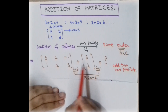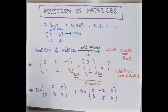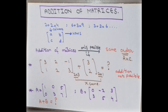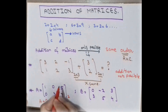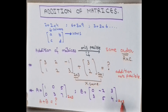If the order of two matrices is not the same, then the addition is not possible. Now take another example. Here is matrix A and matrix B. Before adding, we must check the order of both matrices. Matrix A has two rows and three columns, so its order is 2 by 3. Matrix B also has two rows and three columns, so its order is also 2 by 3.